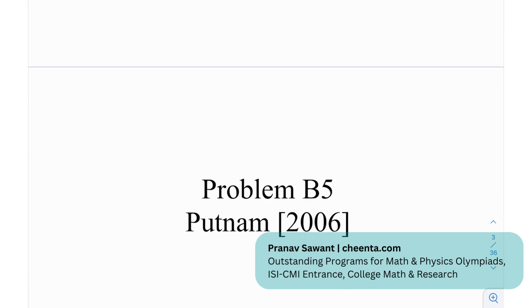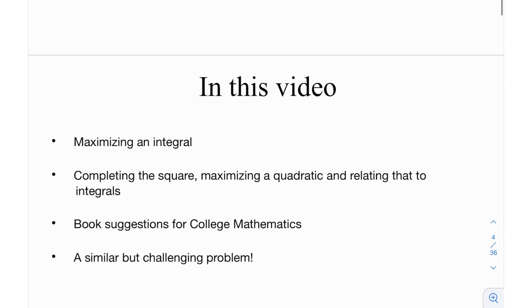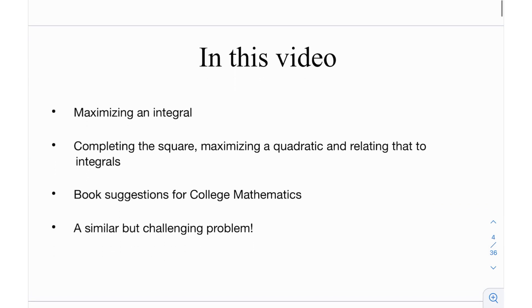This is the problem number B5 from the Putnam exam in 2006. In this video we're going to be talking about maximizing an integral, then we're going to be talking about the method of completing the square in quadratics, maximizing a quadratic and completing the square, and then we relate that to integrals.